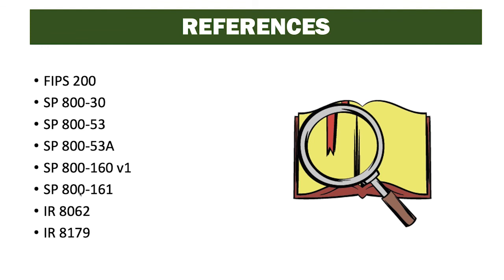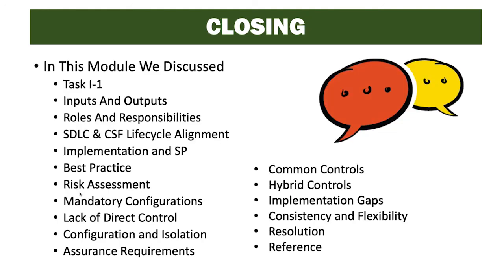References for this task include FIPS 200, Special Publications 830, 53, 53A, 160 Volume 1, 161, and IR 8062 and IR 8179. In this task we covered Task I1 — its inputs and outputs, roles and responsibilities, SDLC and CSF lifecycle alignment, implementation and security plan, best practices, risk assessments, mandatory configurations, lack of direct control, configuration and isolation, assurance requirements, common controls, hybrid controls, implementation gaps, consistency and flexibility, and resolution. If any of this doesn't make sense, go back and watch that portion again; otherwise, continue to the next video or lesson material.